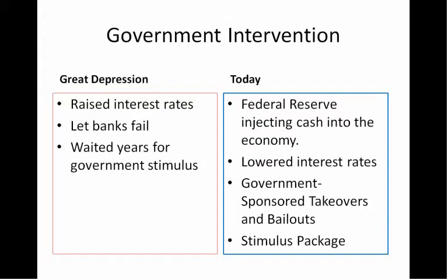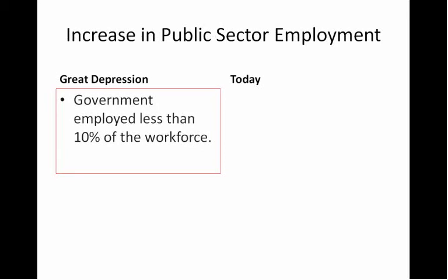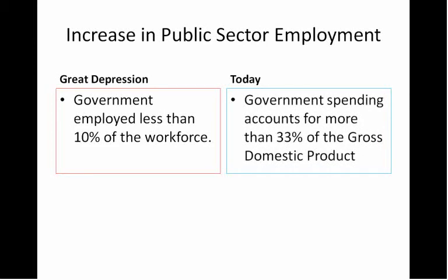The second major difference is an increase in public sector employment. During the Great Depression, the government employed less than 10% of the workforce. Today, on the other hand, the government spends more than 33% — one third — of the gross domestic product. So what this means is that even if all private industry goes down the tubes, there will still be some government spending to keep up a trickle of growth and sustain the economy. In the Great Depression, this government spending wasn't really as much of an option.